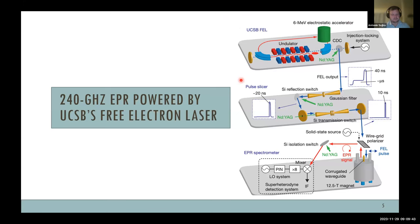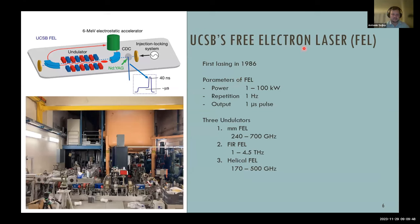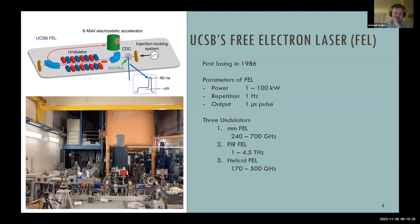First, the UCSB free electron laser. This device is relatively old — first lasing was achieved in 1986. Its main advantage is power: it can provide from 1 to 100 kilowatts over a huge frequency range, starting at 170 GHz and going up to 4.5 THz. The downside is a repetition rate of around 1 Hz, and the output pulse is always 1 microsecond long — you cannot make it shorter.